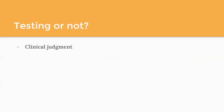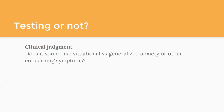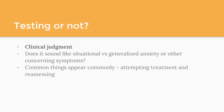When it comes to testing — there could be medical or psychiatric comorbidities. When to test or not, especially if you're doing telemedicine and trying to keep patients out of the clinic, comes down to clinical judgment based on your history, especially if you can't examine them physically. Does it sound like situational or generalized anxiety, or do they have concerning symptoms where you want to rule out an arrhythmia or hyperthyroidism? Common things appear commonly — do you want to attempt to treat for anxiety and reassess if they're not getting better, getting worse, or if something else is going on?